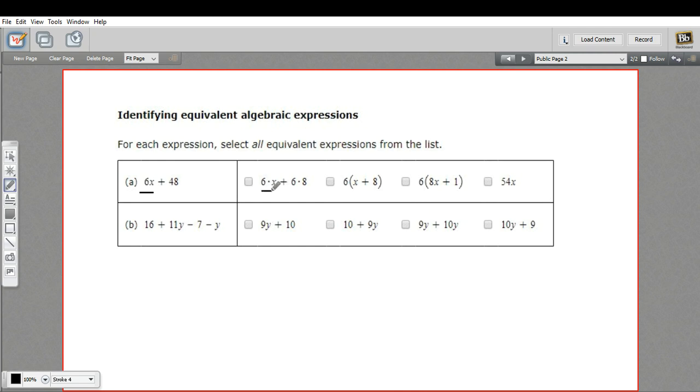So when I see this, 6 times x, I know that those two things are the same. And then here we have 6 times 8. Well, 6 times 8 is 48. So we have 6x plus 48 here. So this one's definitely the same.